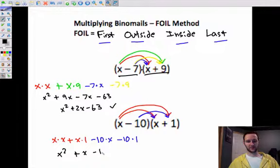That makes this x squared plus x minus 10x minus 10. So that's x squared. Combine like terms, you get negative 9x minus 10.